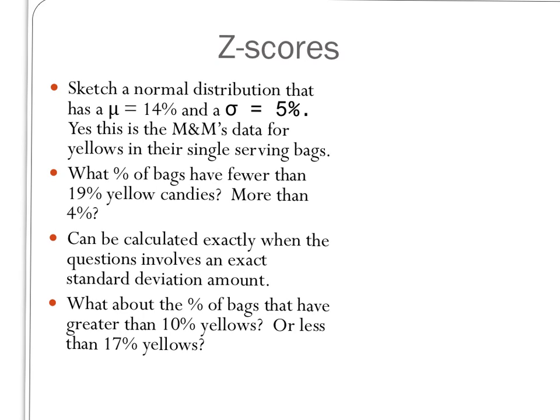Okay, here's some problems involving a normal distribution, or a normal curve. So sketch a normal distribution that has a mu of 14.2%, which remember is mean, and a sigma, which is standard deviation, of 5%. This is actually the same data as the M&M's data that we used in class earlier this week. And then once we get that, we can answer questions like what percentage of bags have fewer than 19% yellow candies or more than 4%?